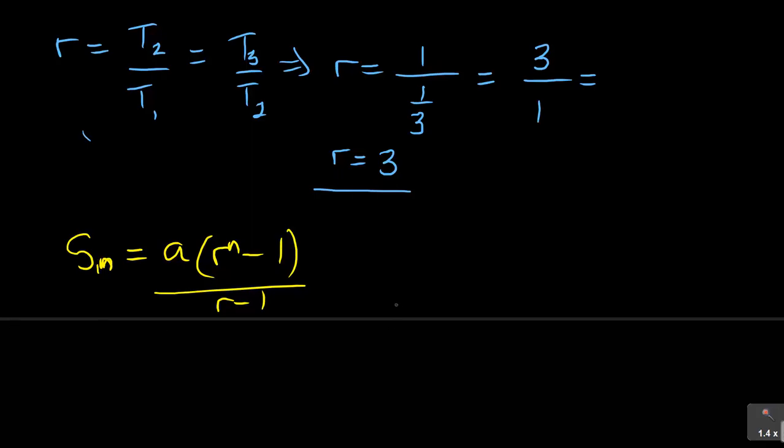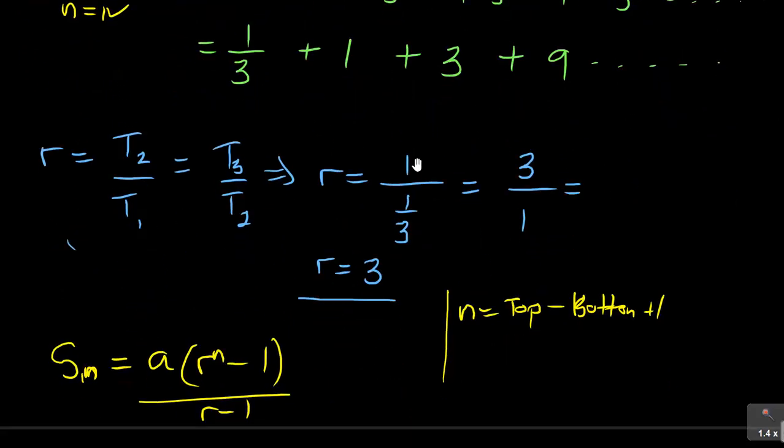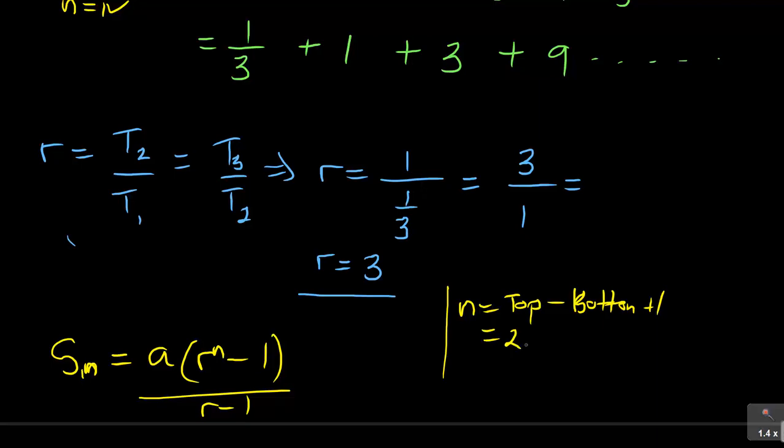First things now, you need to find your N. How do you find N? N equals top minus bottom plus 1. We are saying N is this top minus this bottom plus 1. So it's 20 minus 1 plus 1, which gives us 20. So N equals 20.